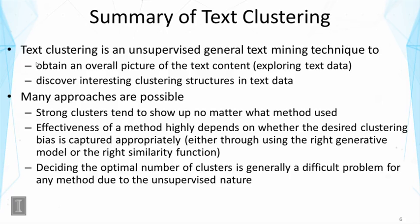In general, strong clusters tend to show up no matter what method is used. The effectiveness of a method highly depends on whether the desired clustering bias is captured appropriately — either through using the right generative model appropriate for the cluster, or the right similarity function to explicitly define the bias. Deciding the optimal number of clusters is a very difficult problem for all clustering methods, because it's an unsupervised algorithm and there's no training data to guide us in selecting the best number.